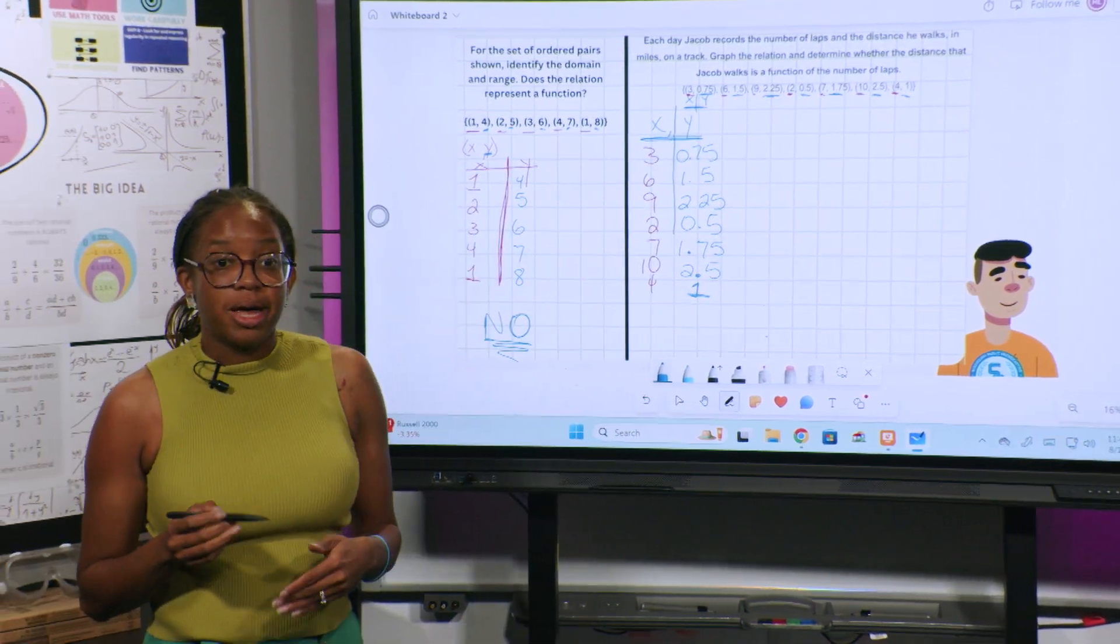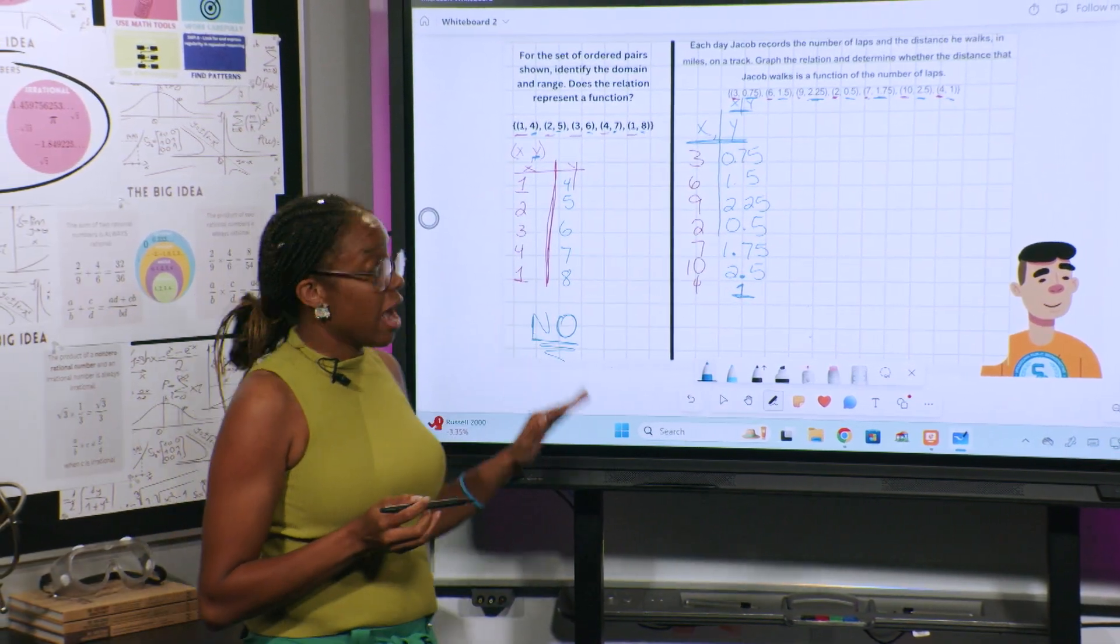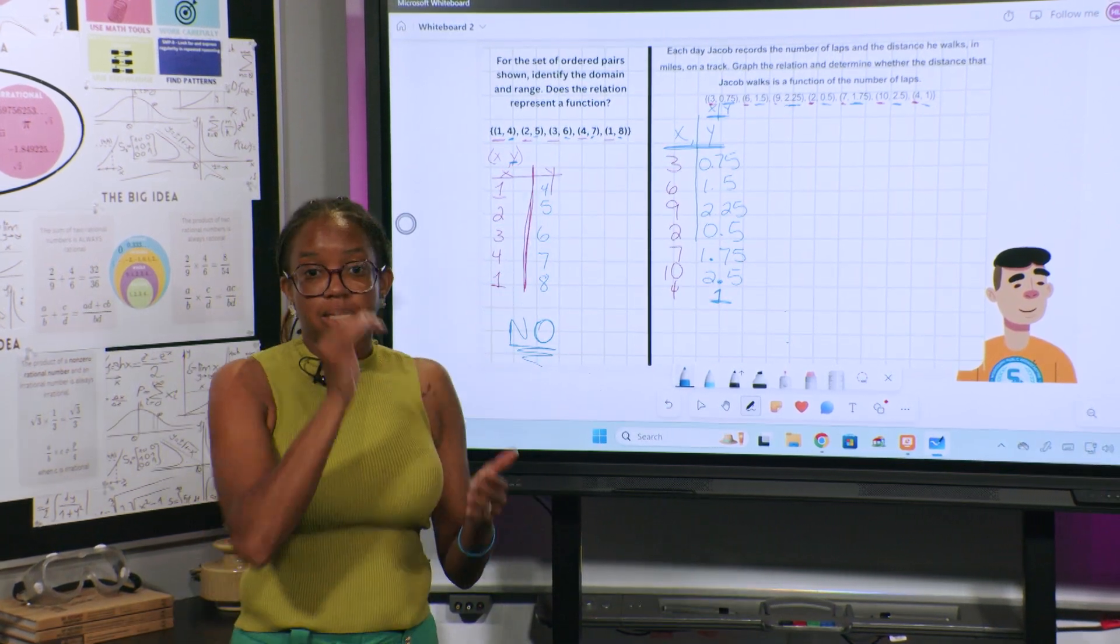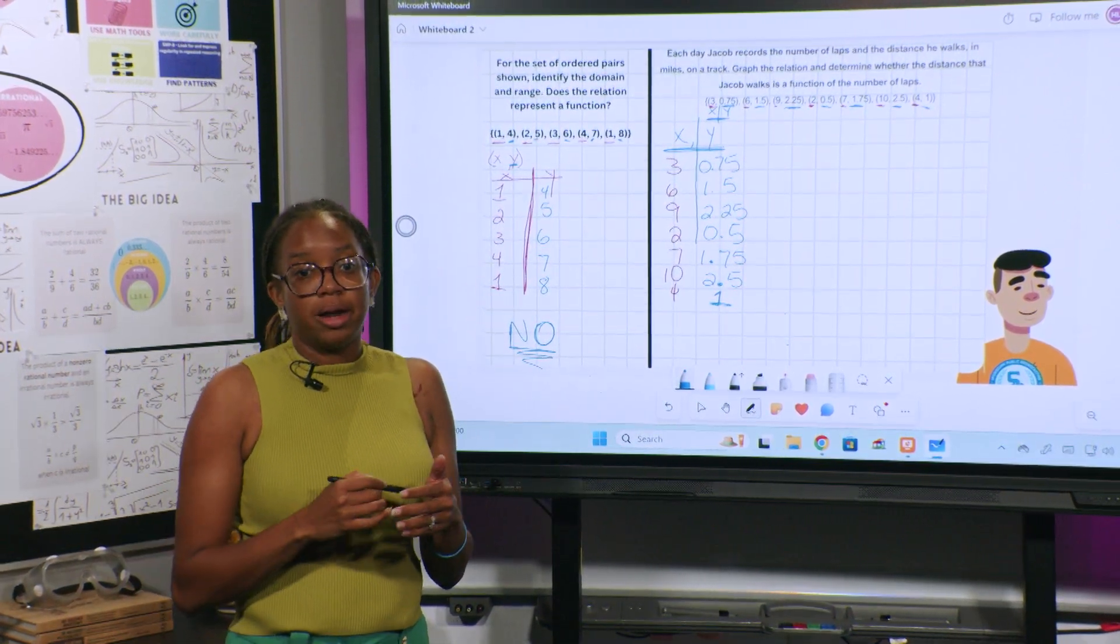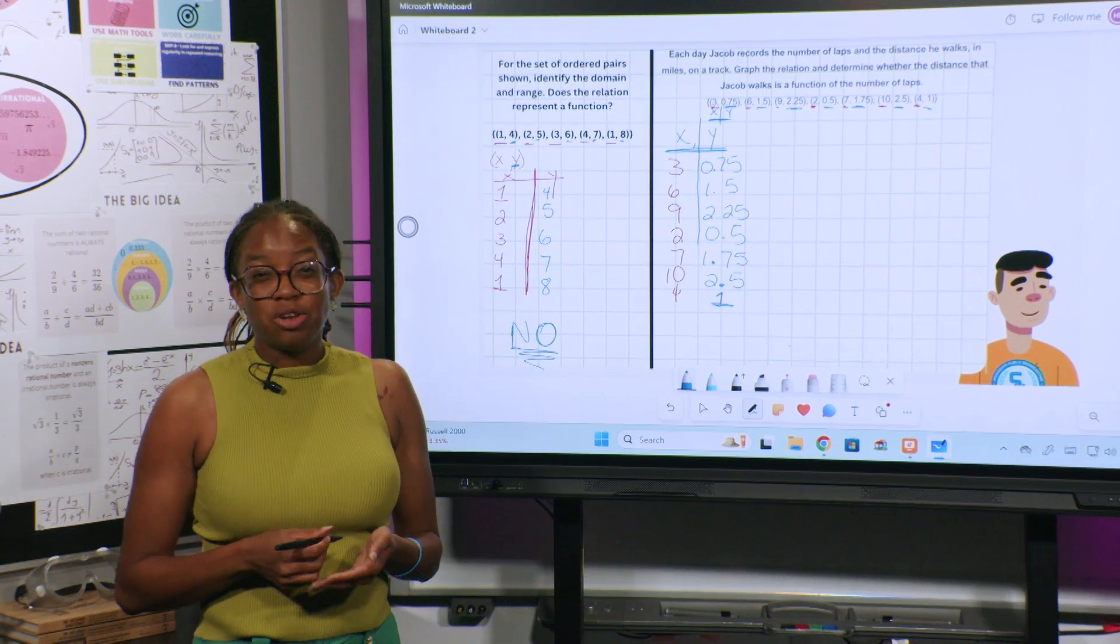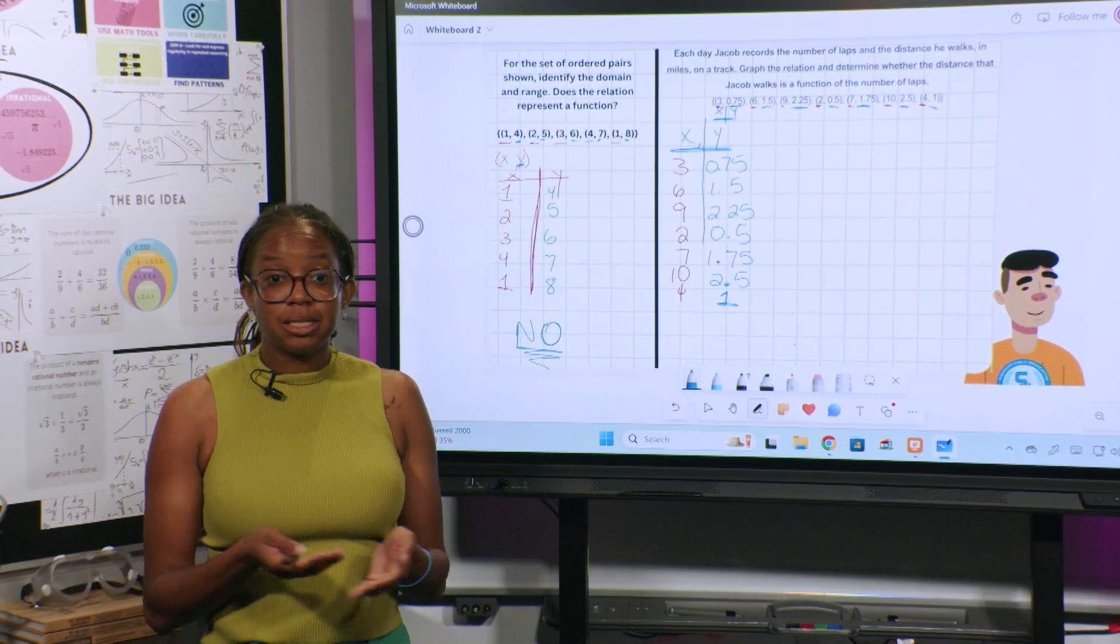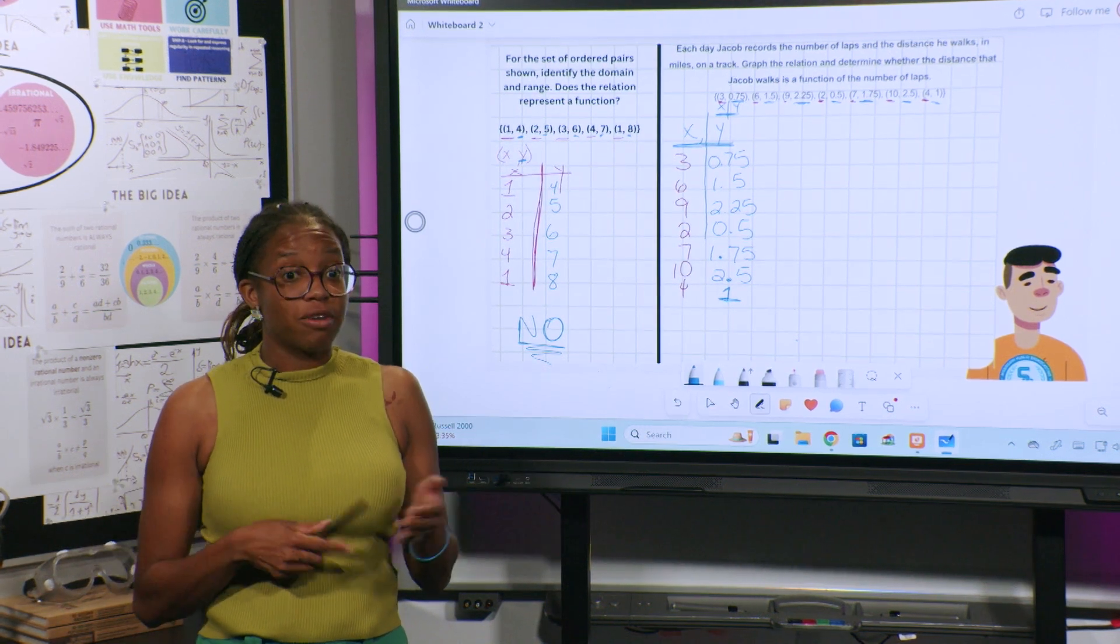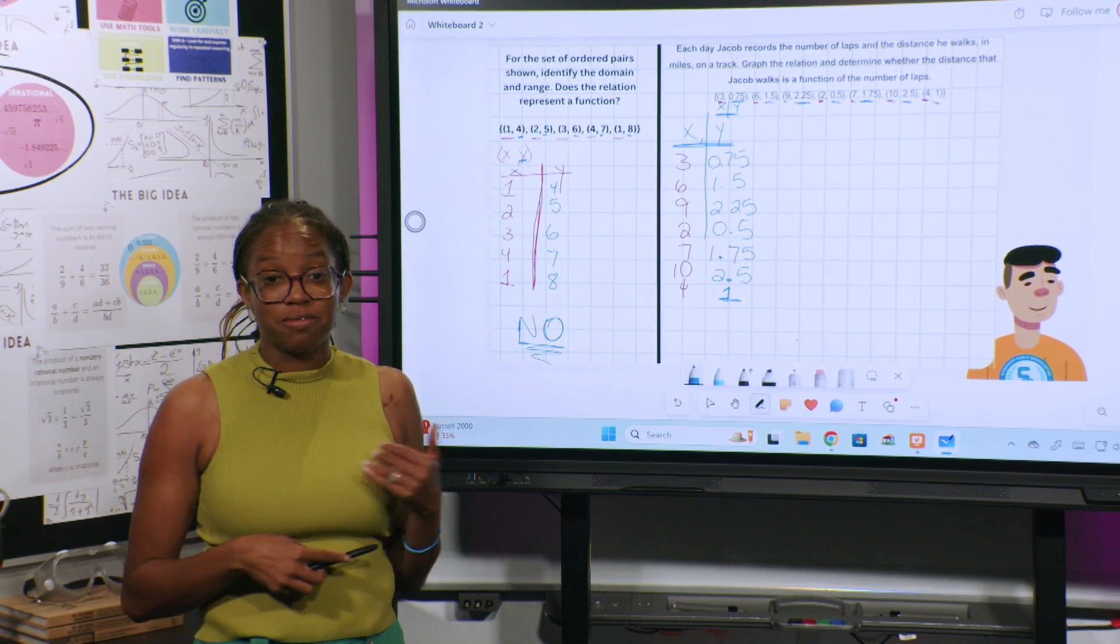I can also go ahead and graph this. Using the Desmos calculator, I can put this in and see whether or not it's going to be a function. I can do what's called the vertical line test if I graph this to see if it would pass the vertical line test to see if it was a function or not.